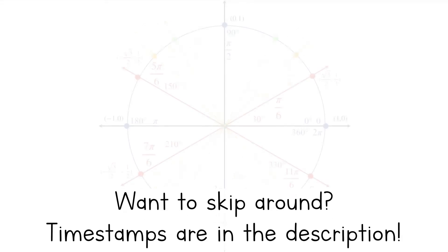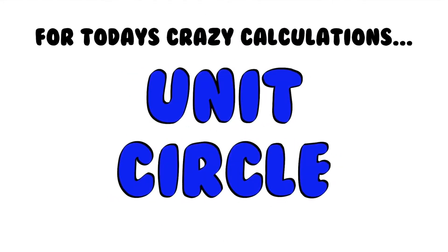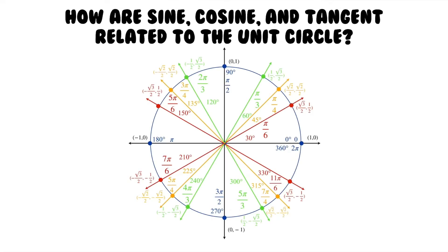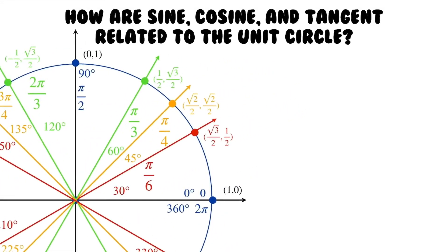In the last video, we broke down the unit circle and talked about all the different parts of it. For today's video, we're going to be talking about the unit circle and how it relates to sine, cosine, and tangent. So how are sine, cosine, and tangent related to the unit circle? Let's take a look in the first quadrant of our unit circle.